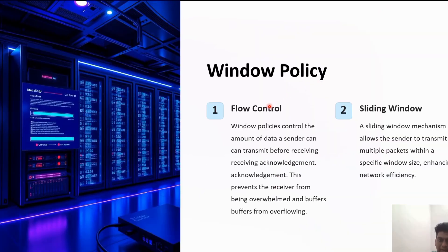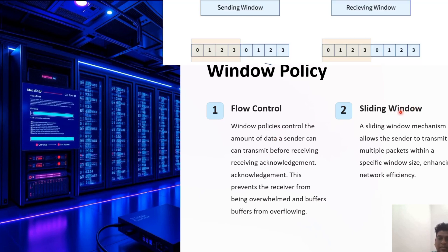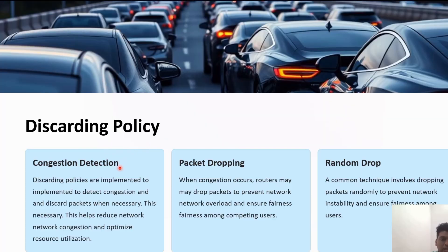The next type is window policy, which can be classified into flow control and sliding window. It controls the amount of data a sender can transmit before receiving an acknowledgement. A sliding window mechanism allows the sender to transmit multiple packets within a specific window size, which helps in enhancing network efficiency.